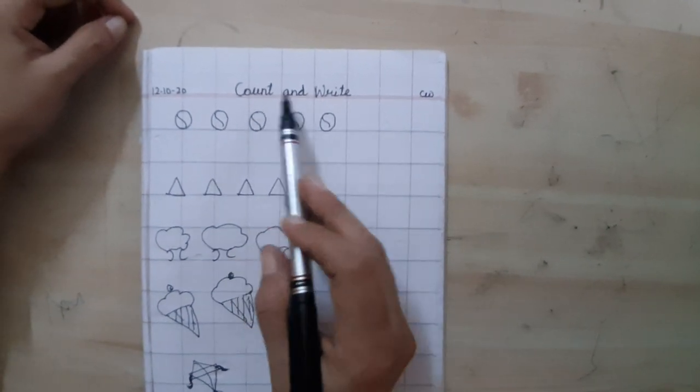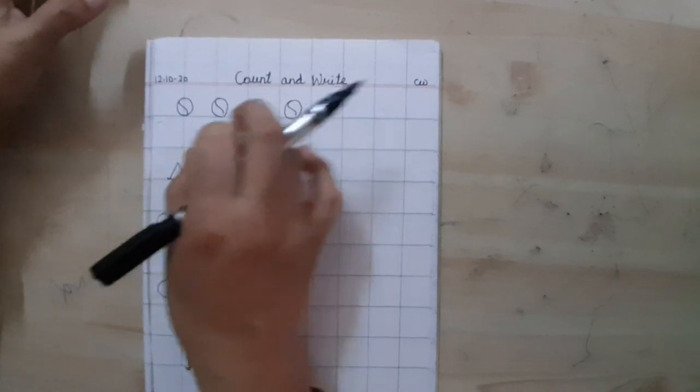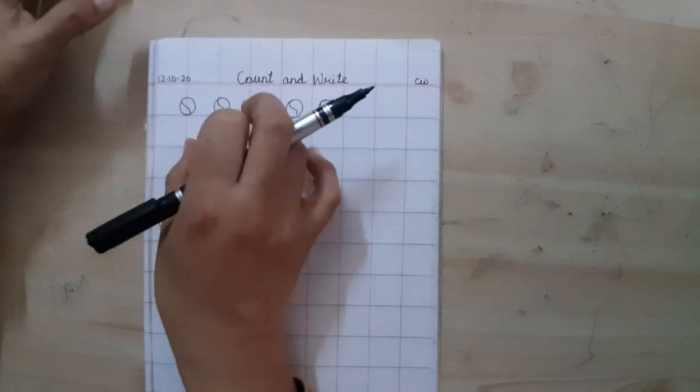In this topic count and write you count all the objects which are given to you and write the number. How many objects are there?